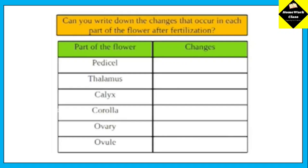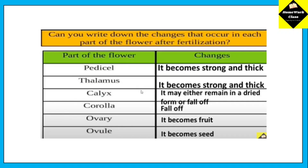Can you write down the changes that occur in each part of the flower after fertilization? Pedicel becomes strong and thick. Thalamus becomes strong and thick. Calyx may either remain in a dried form or fall off. Corolla falls off. Ovary becomes fruit. Ovule becomes seed.